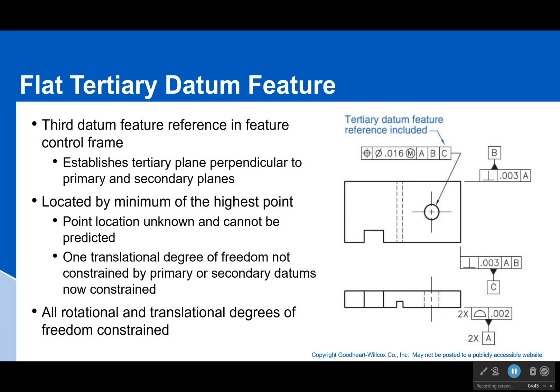So finally, our third tertiary datum plane is going to get rid of that last translational degree of freedom. And it takes one point. It's going to be the highest point. And we don't know where that is, just like in the previous equations.